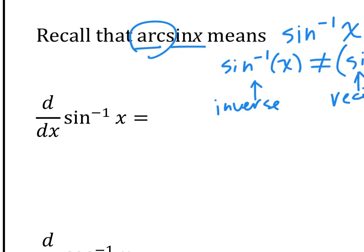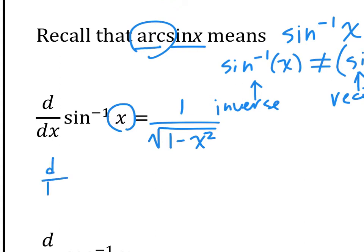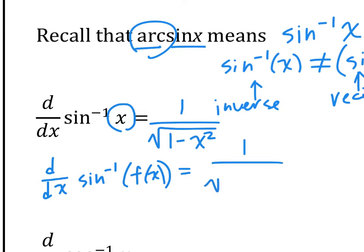Now let's talk about the actual derivatives. The derivative of inverse sine of x is 1 over the square root of 1 minus x squared. Remember, the chain rule always applies. If there is just an x inside, that's the derivative. But if the inside is a function f of x, then the derivative is 1 over the square root of 1 minus f(x) squared, times the derivative of that function. If it's anything other than just x — like 2x, square root x, or cosine x — you must apply the chain rule.